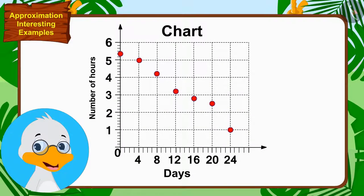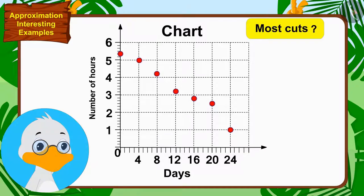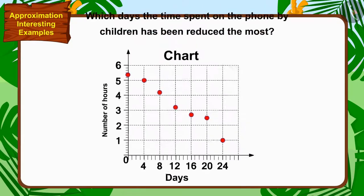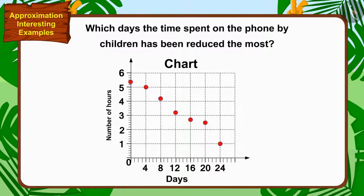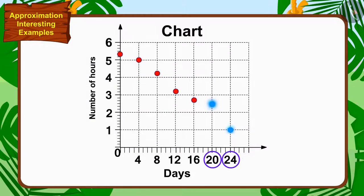24 days are over. Let me look at this chart to find out between which days the time spent on the phone by children has been cut the most. Children, can you find the answer by looking at this chart? You can find a solution by stopping the video. The distance between the heights of the dots of the 20th and 24th days is the highest. Hence, the most reduction in time spent on the phone occurred between the 20th and 24th days.